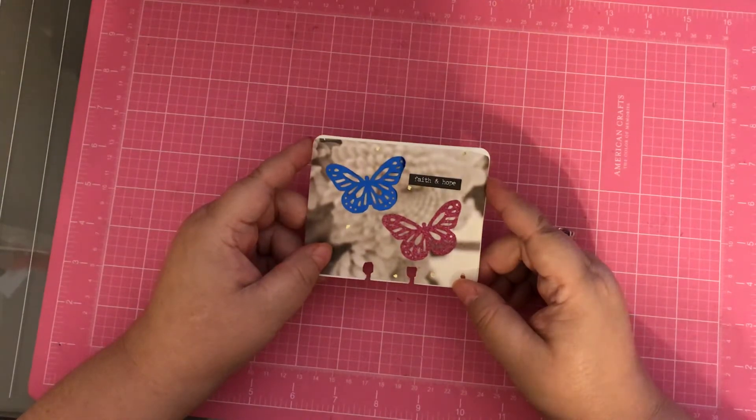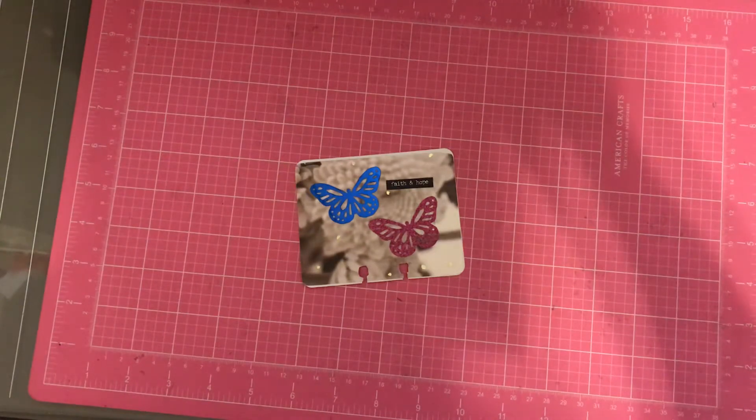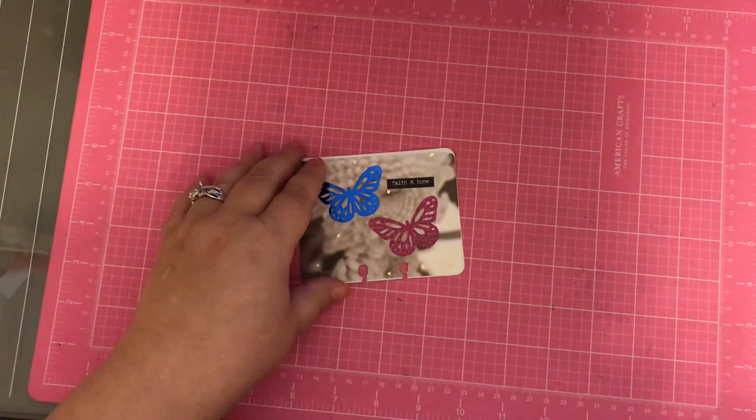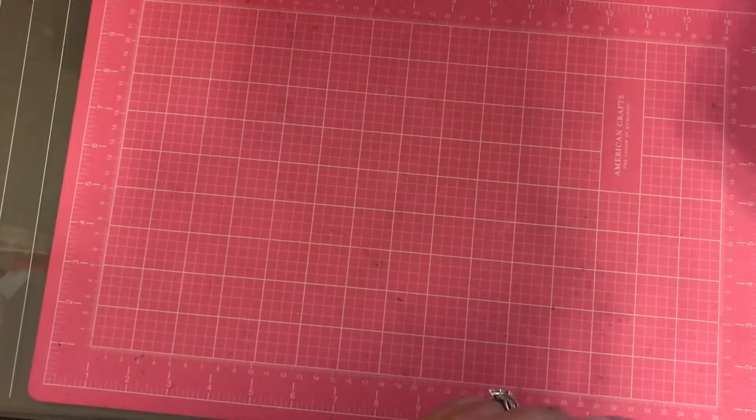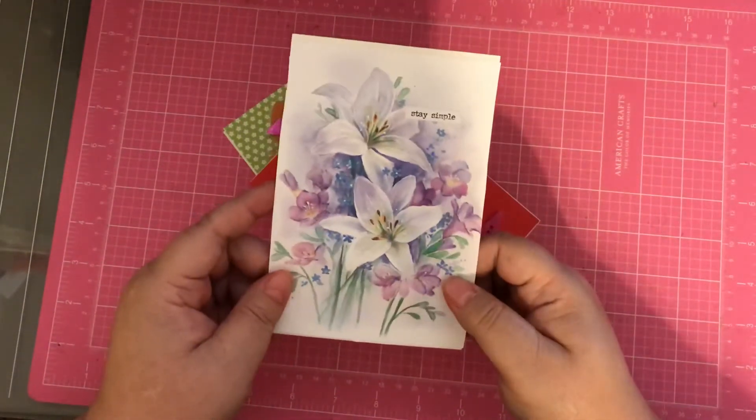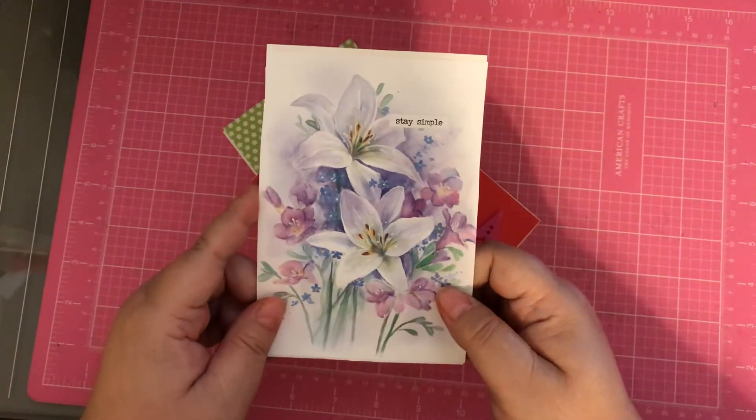That's the card I'm going to be sending to her. And then I have three IC cards that I made. I made this one and it says 'stay simple,' and I thought that was perfect for this because it's just simple flowers.